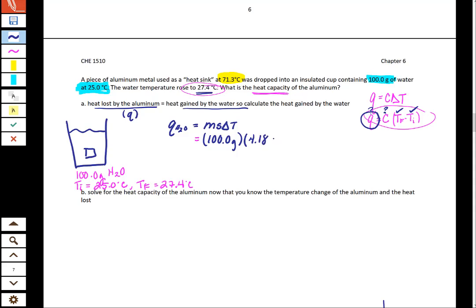And sometimes you'll see our textbook leave off the 4. So I'll leave it off here just so we can see that it doesn't matter really very much in the grand scheme of things. And then our delta T is 27.4 as our T final and 25.0 as our T initial.